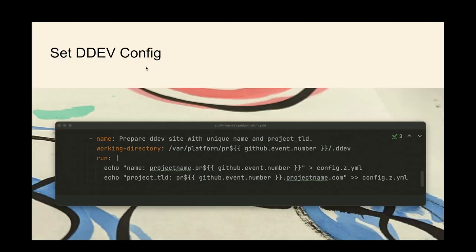This is the DDEV magic. DDEV creates URLs based on the project name — project.ddev.site. We can clone multiple projects on one thing. For each one, the new URL. Every site will be project-name dot PR-number dot TLD. So it's a little difficult, but I'm going to work with DDEV to see if we can make it a little easier to do that trick.